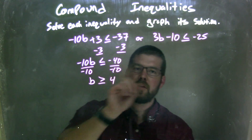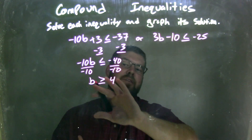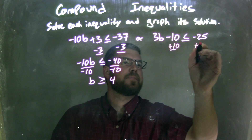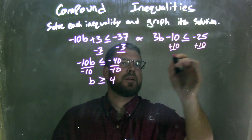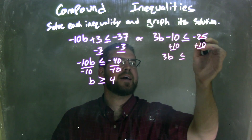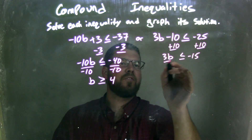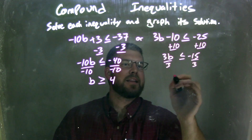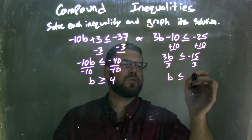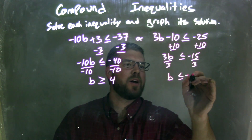Now I'm going to solve the other one. I added 10 to both sides, leaving me with 3b is less than or equal to negative 15, and then divide by 3 on both sides, leaving me with b is less than or equal to negative 5.